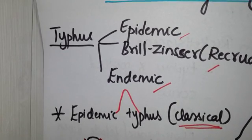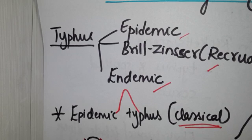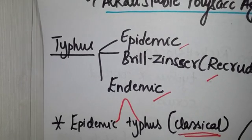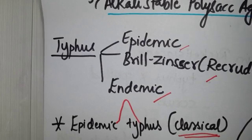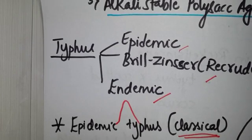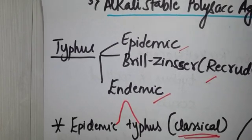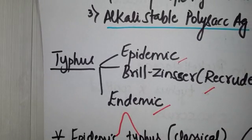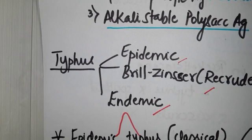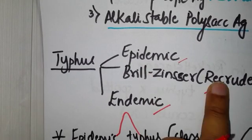In some people who recover completely from epidemic typhus, they may have some of the species left back in their body or it may persist in latent form in lymphoid organs for many years. It's something like your herpes which is latent and can get reactivated. That's as simple as that, and the reactivated form is your Brill-Zinsser disease.